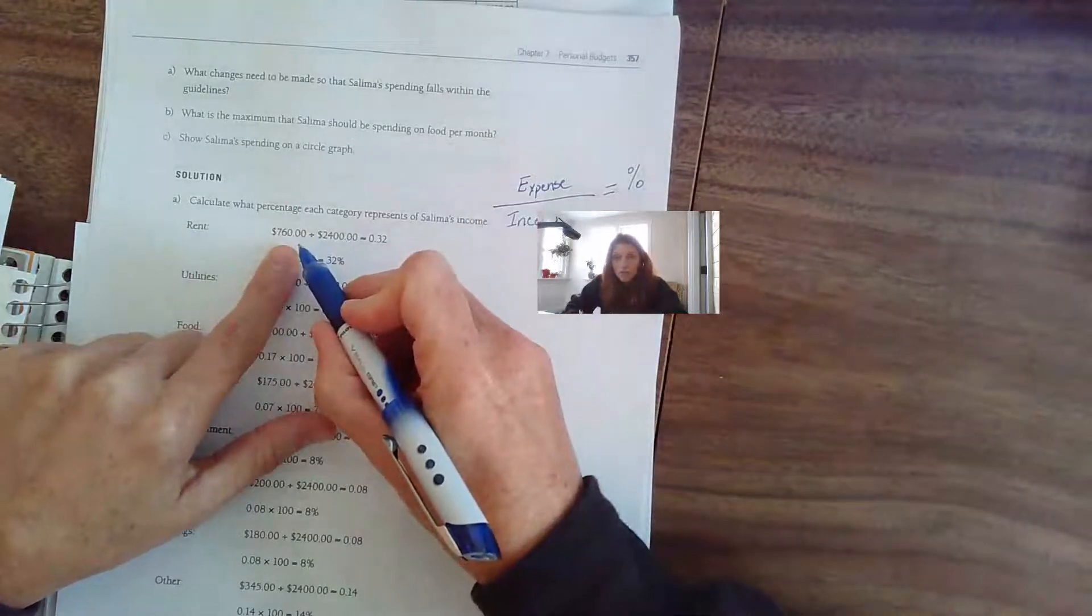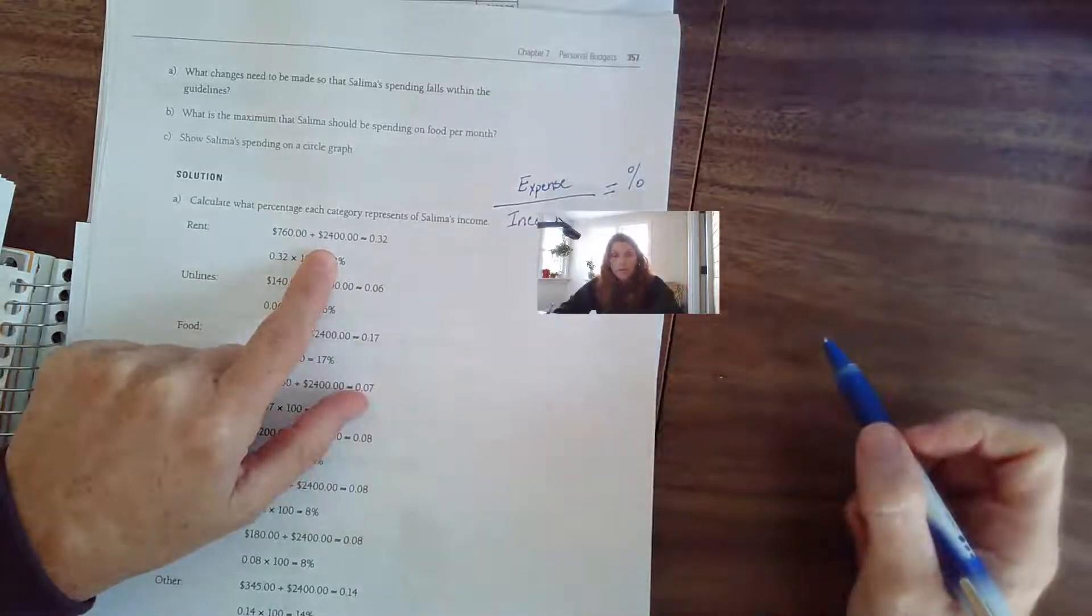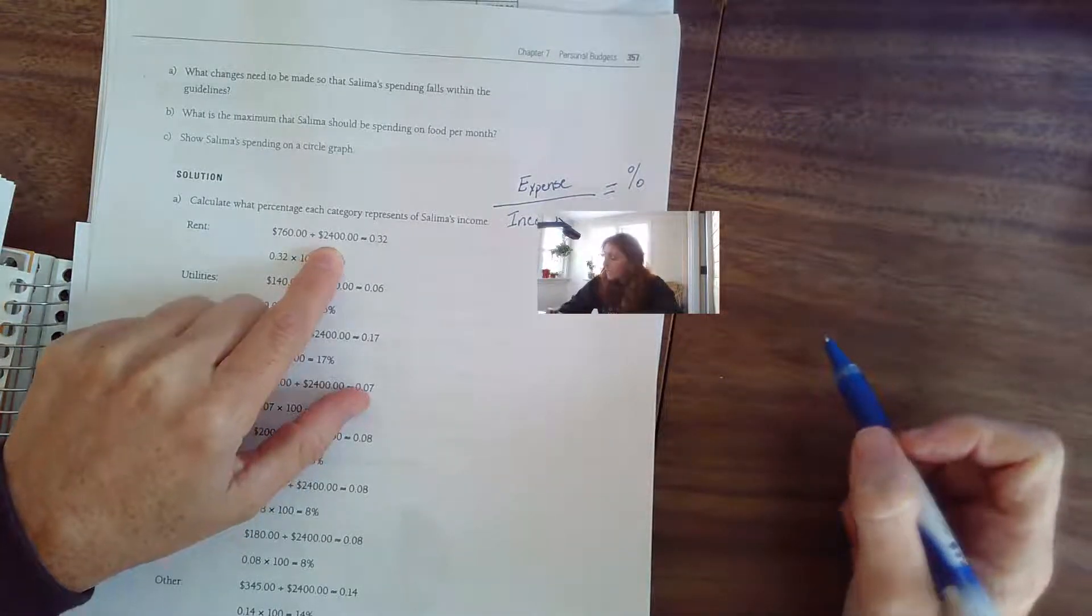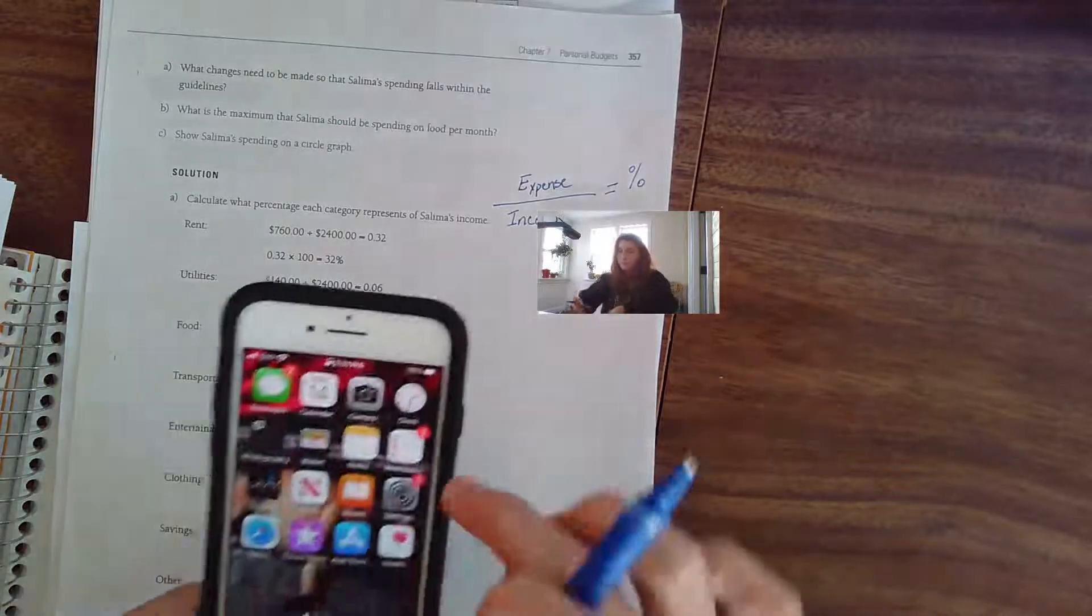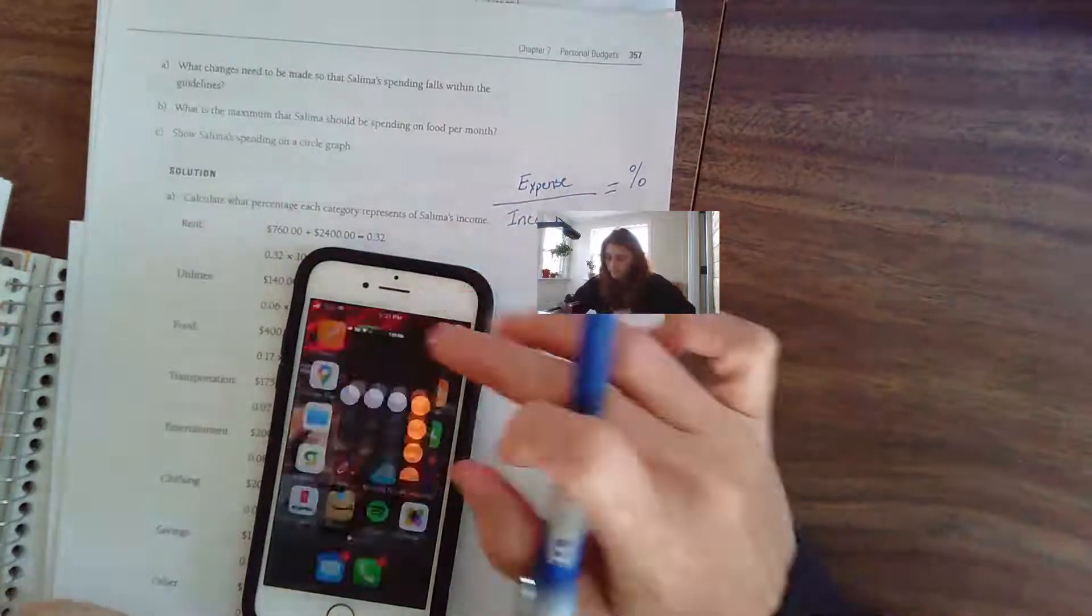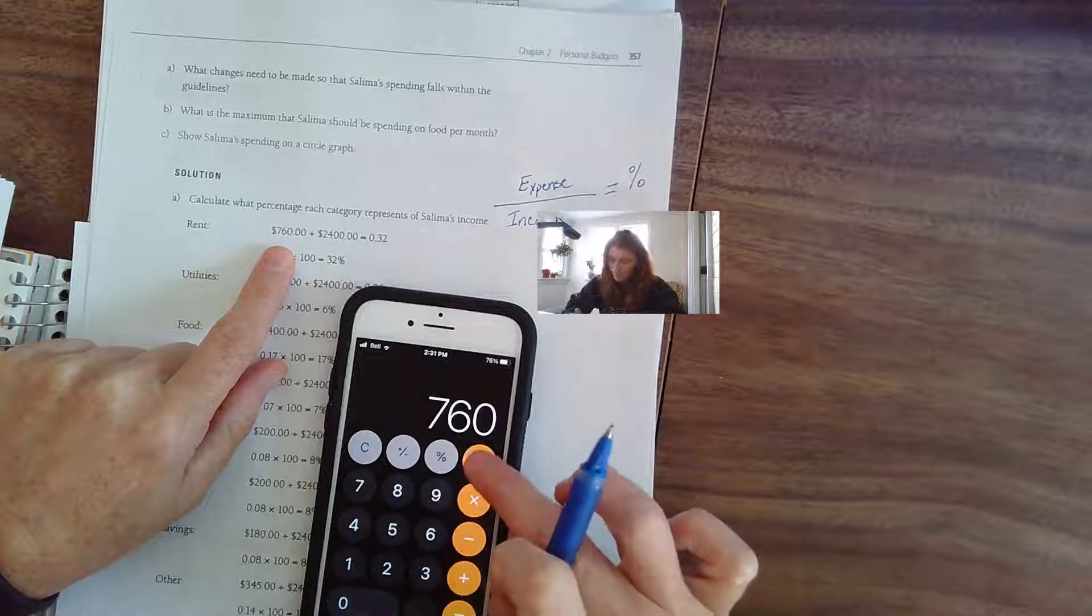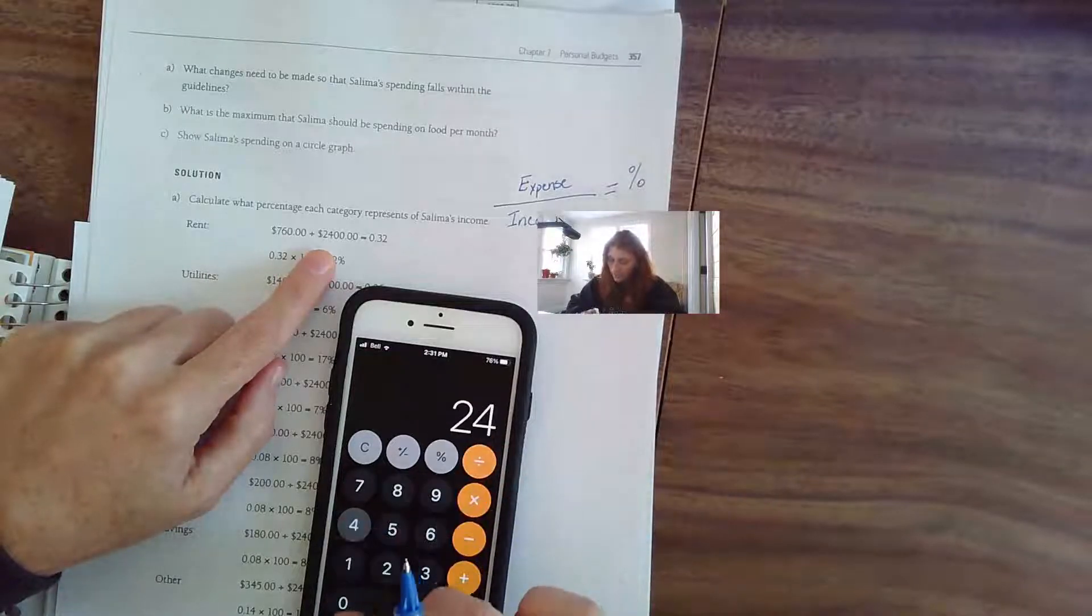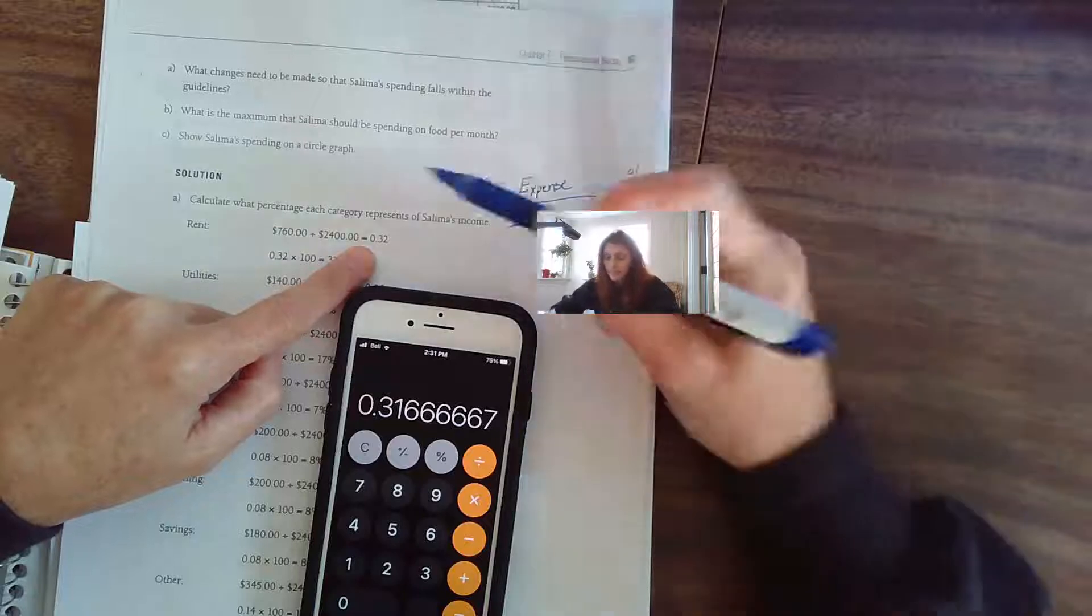How much are you spending on different expenses out of whatever that income is gives you what percentage you've spent on that expense. So rent, the expense is $760 divided by the income $2,400. I'm going to pull up my calculator. $760 divided by $2,400 gives you your percent.